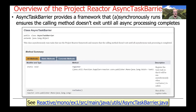So essentially, AsyncTaskBarrier provides a framework that asynchronously or synchronously runs tasks in the background, thereby ensuring the calling method doesn't exit until all the asynchronous processing is finished.